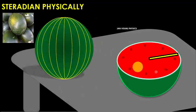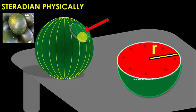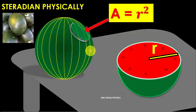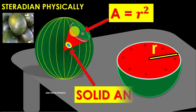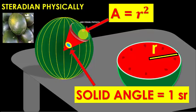Now we see a solid angle of one steradian practically. This is a watermelon. First we find the radius of the watermelon, then we take a circular surface on this spherical object. If the area of this surface is equal to the square of the radius of this spherical object, then the angle subtended by this surface at the center is one steradian. In this way we can get a cone of one steradian practically.